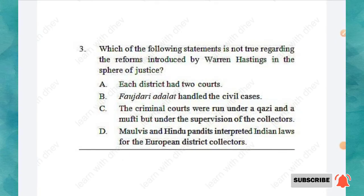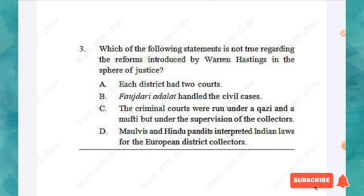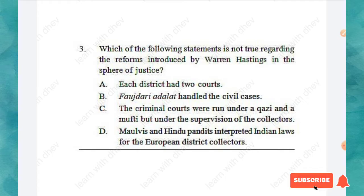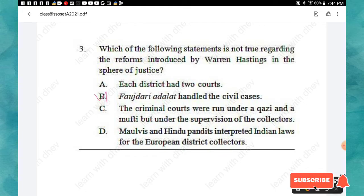Question 3: Which statement is not true regarding the reforms introduced by Warren Hastings in the sphere of justice? Option A: Each district had two courts. Option B: Faujdari Adalat handled civil cases. Option C: Criminal courts were run under a Khazi and a Mufti but under the supervision of collectors. Option D: Maulvis and Hindu pundits interpreted Indian laws for European district collectors. The right answer is option B — Faujdari Adalat handled criminal, not civil, cases.